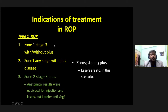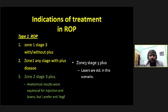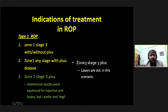Classical treatment indications are: type one ROP — zone one stage three with or without plus, zone one any stage with plus, zone two stage three plus. The BEAT-ROP and Rainbow trials showed equivalent results for posterior zone two, but they focus only on anatomical outcomes. These neonates will be young people, and if laser has compromised their visual field significantly, they will be curtailing many activities — sports and professional choices included. Anti-VEGF trials looked at anatomical outcome, not quality of life. For zone three stage three plus, I still believe laser is the standard.